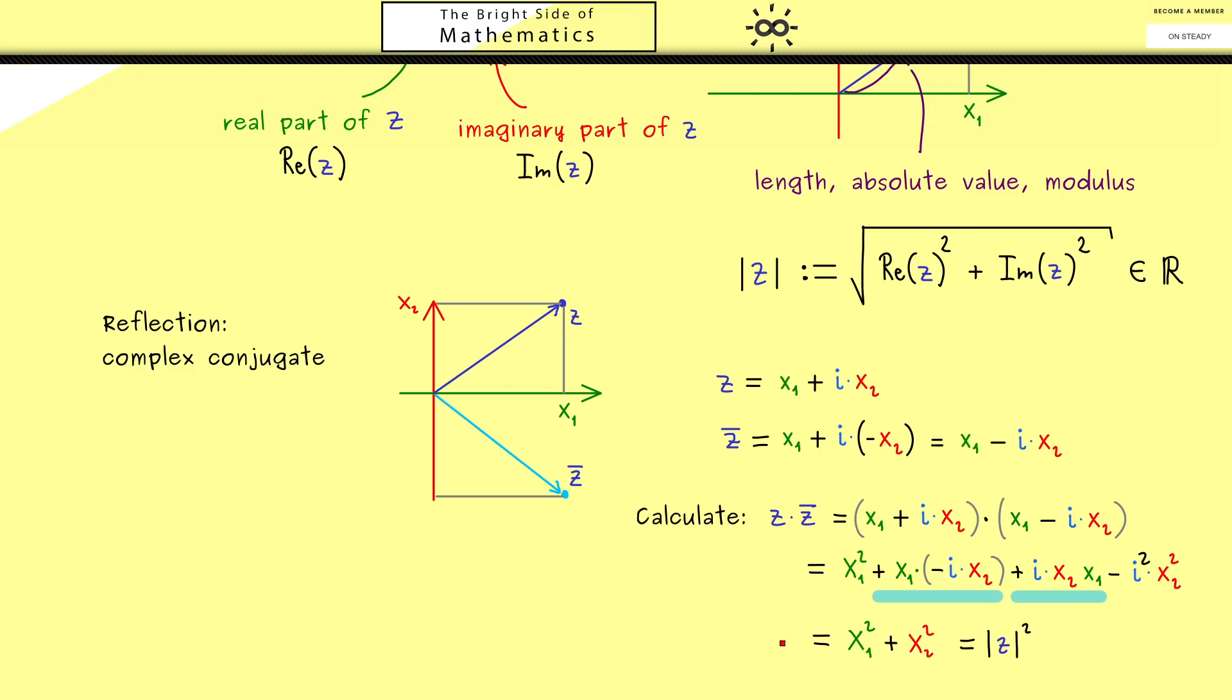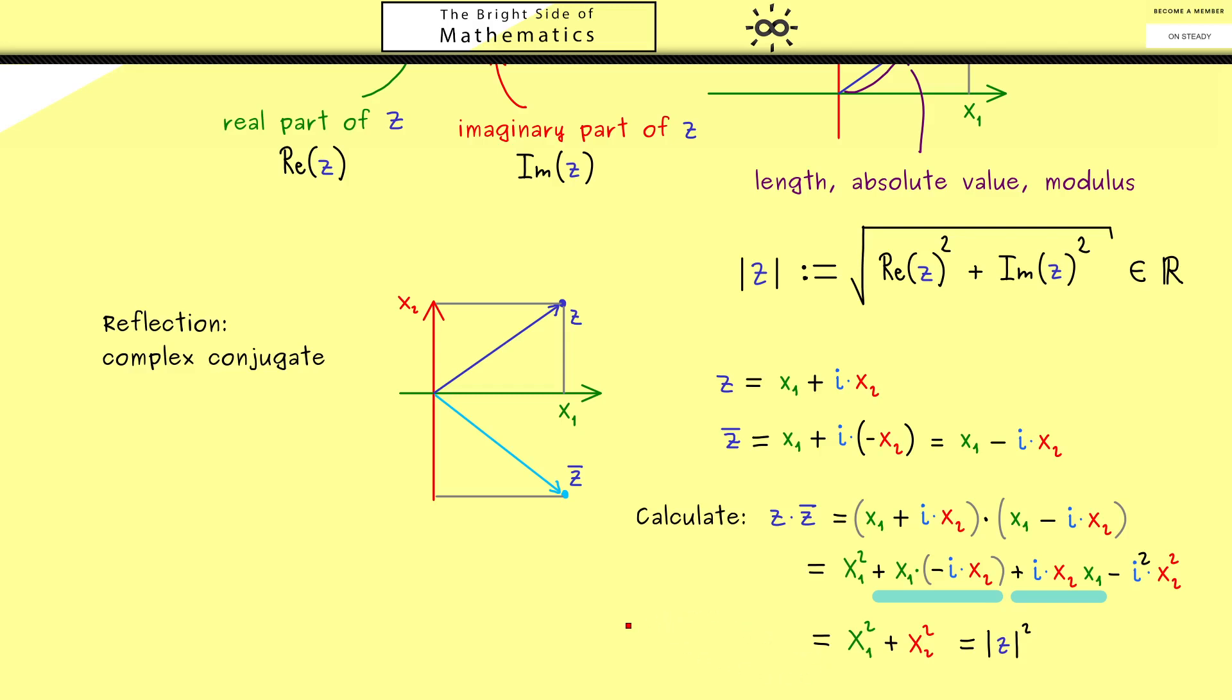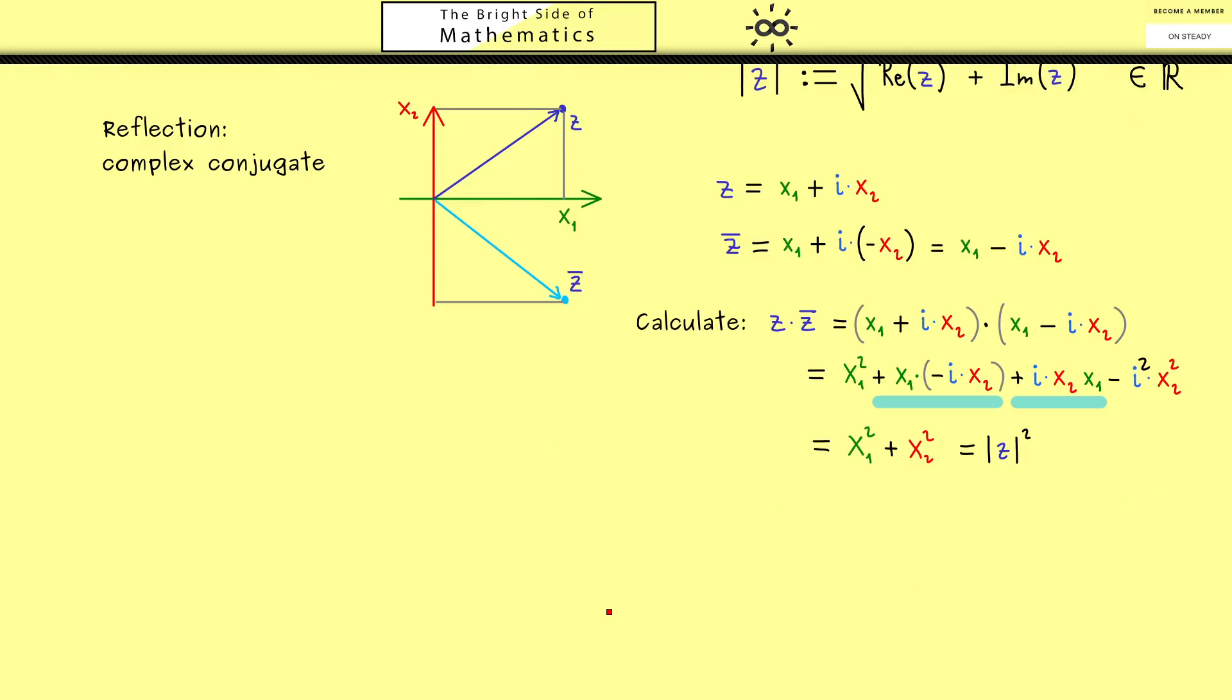And you might already see this a little bit in our next part when we talk about polar coordinates. Indeed these here can be very helpful when you need to multiply complex numbers. We can use the picture from before because we already have one half for the polar coordinates.